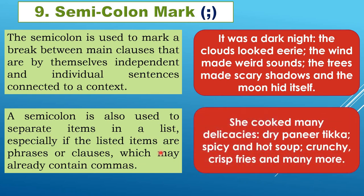Example: 'She cooked many delicacies: dry paneer tikka; spicy and hot soup; crunchy, crisp fries; and many more.' A colon connects everything to 'delicacies,' and semicolons separate the phrases in the list. The comma inside 'crunchy, crisp fries' separates two adjectives describing the same item. This shows how both colon and semicolon work together.